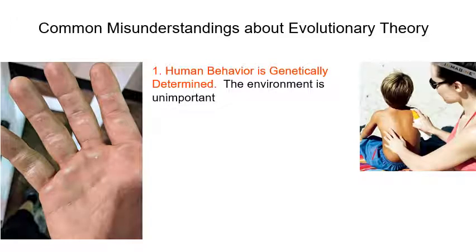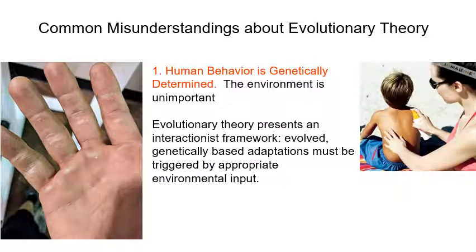Now let's transition into some common misunderstandings about evolutionary theory. One big misconception is that if we're talking about the biological side of evolution, then the environment is unimportant and behavior is genetically determined. That's not true. Evolutionary theory is a very interactionist framework — both genetically based predispositions and adaptations, and environmental triggers, are what's important.